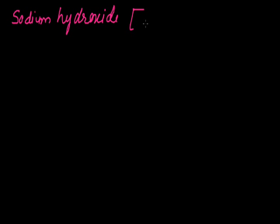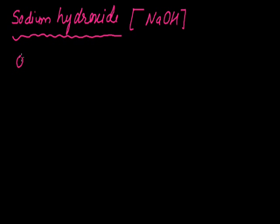The general formula of sodium hydroxide is NaOH. Another name for sodium hydroxide is caustic soda.